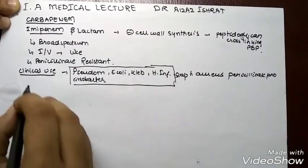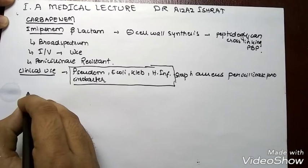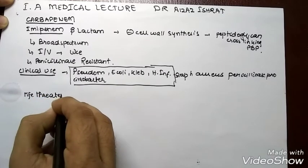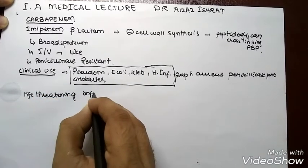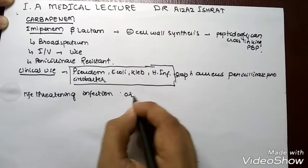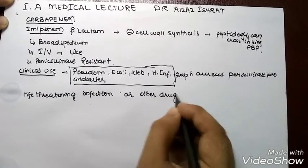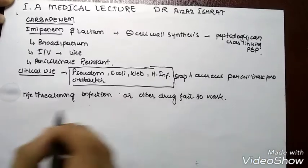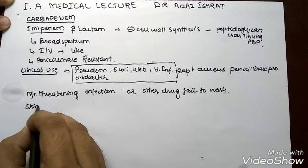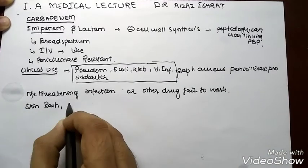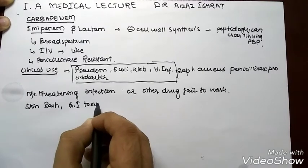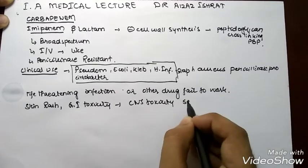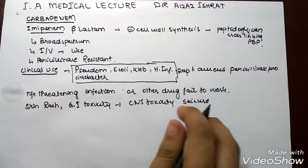We use imipenem when we have a life-threatening infection and our other drugs fail to work. We use imipenem cautiously because it has side effects including skin rash, GI toxicity, and CNS toxicity — specifically seizures.